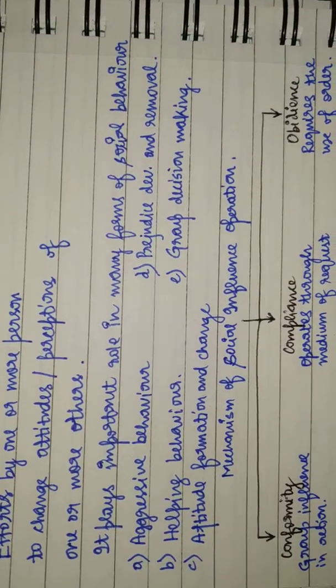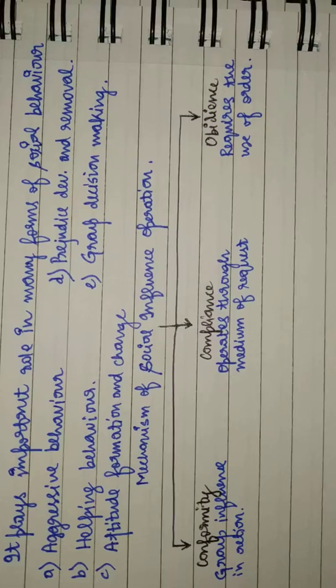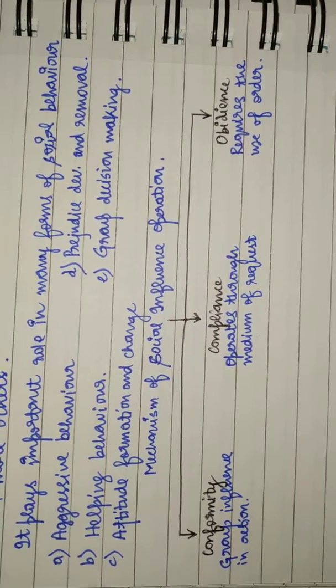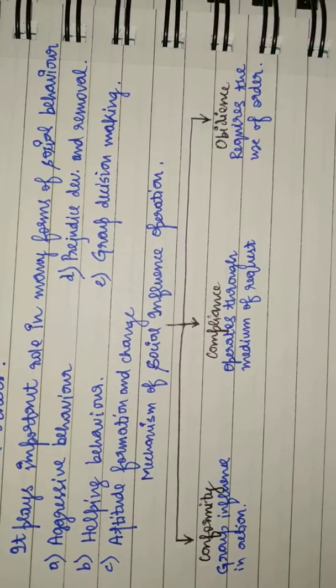Now let's see what is the mechanism of social influence operation. It works via three ways: conformity, compliance, and obedience.